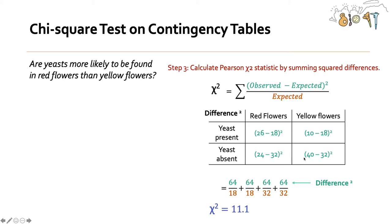So this table calculates the numerator, and then we'll sum all of these differences to get a chi-square statistic. All right, so 26 minus 18 squared is 64 over 18, which is expected. So we add up all of these, sum just means add up all of these, and we get this chi-square statistic of 11.1.